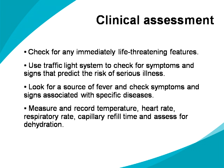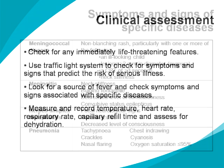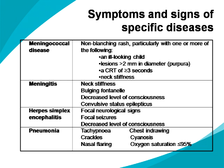Could you please outline some symptoms and signs of specific diseases we should look out for? For meningococcal disease: non-blanching rash, particularly with one or more of the following — an ill-looking child, lesions greater than 2 mm in diameter (purpura), a capillary refill time greater than or equal to 3 seconds, or neck stiffness. For meningitis: neck stiffness, bulging fontanelle, decreased level of consciousness, and convulsive status epilepticus.